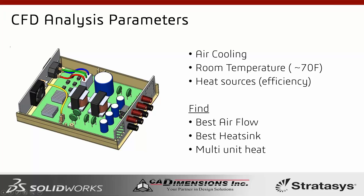For this example, our fan is pulling the air in. There will be instances where you need the fan to be blowing air out — these are the types of things you can run in Flow Simulation, including changing the fan direction. The third parameter is the heat sources, based on efficiency. For example, a 100-watt chip at 80% efficiency is dissipating 20 watts of heat — that's how we apply it in Flow Simulation.